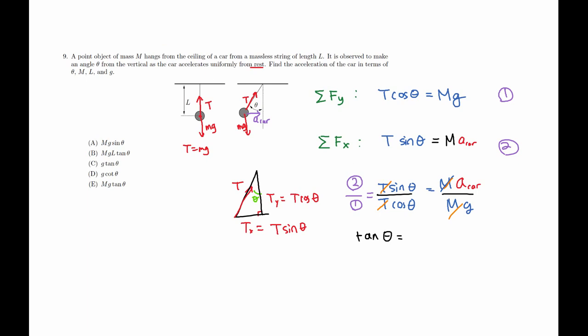And then just multiply constant g on both sides. Therefore, I have the acceleration of the car, and that is g tangent theta.